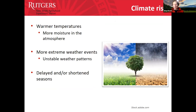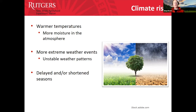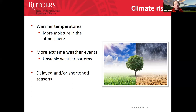Now that we've covered stormwater management, let's think about the climate risks ahead and how to mitigate them. With our changing climate we have warmer temperatures, more moisture in the atmosphere, more extreme weather events, and unstable weather patterns. We are seeing delayed and shortened seasons, and the USDA plant hardiness zones are shifting, so we need to adapt to all of these changes.